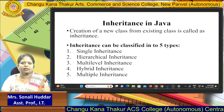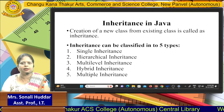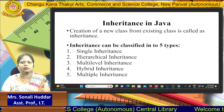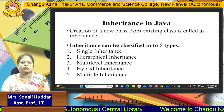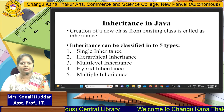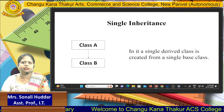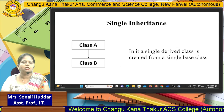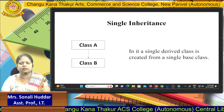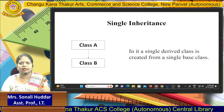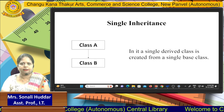Inheritance is divided into five types: single inheritance, hierarchical inheritance, multilevel inheritance, hybrid inheritance, and multiple inheritance. Now we are going to learn in detail about single inheritance. In single inheritance, one single class works as a parent class and one single class works as a child class.